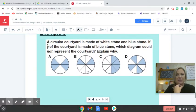One last example here for us to take a look at, and this is a circular. A circular courtyard is made of white stone and blue stone. If one half of the courtyard is made of blue stone, which diagram could not represent the courtyard? Explain why. Give this a try and unpause your video when you're ready to check your work.